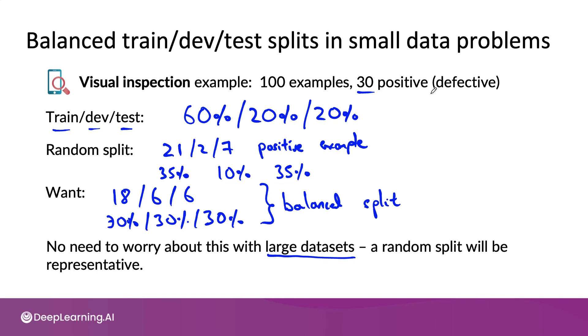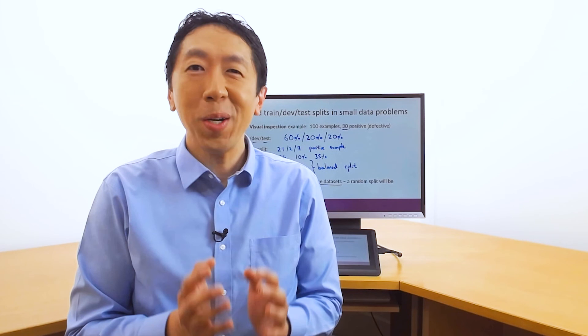This is one of those little techniques that turns out to make a big difference when you're working on a small data problem, but that you don't really need to worry about if you have a very large dataset. So when you have a smaller dataset, I hope you consider using a balanced train-dev-test split in how you set up your dataset.